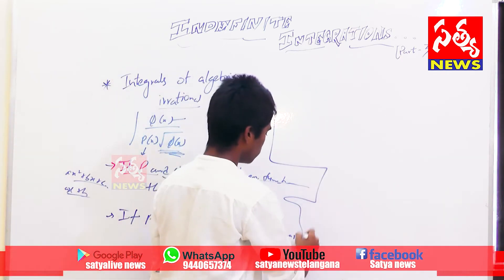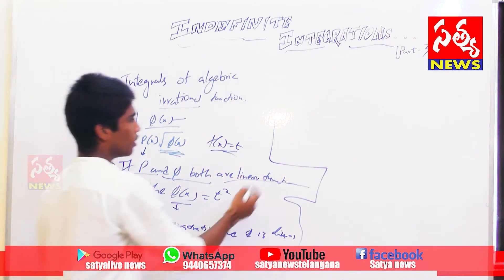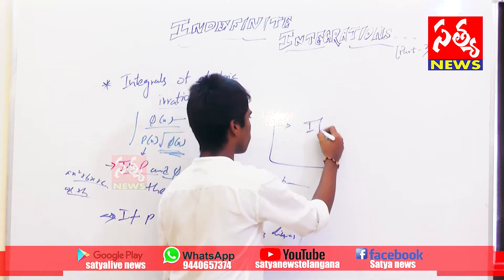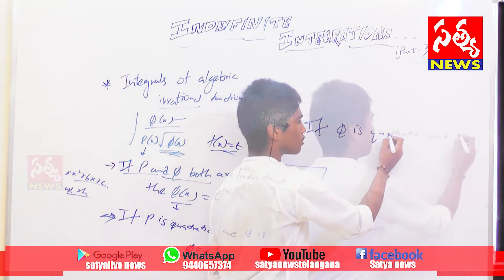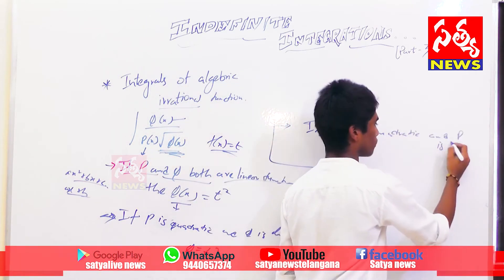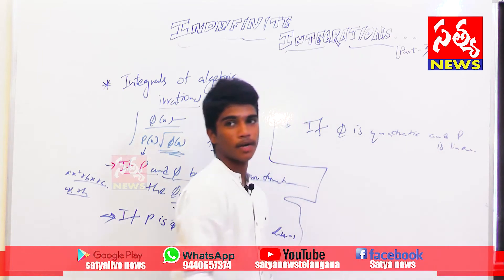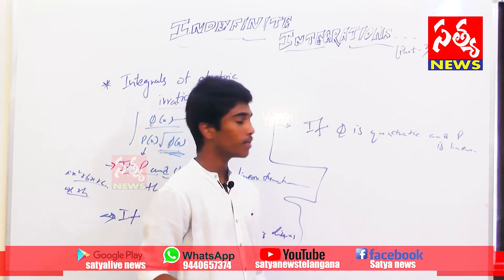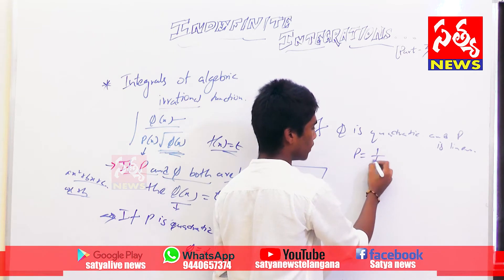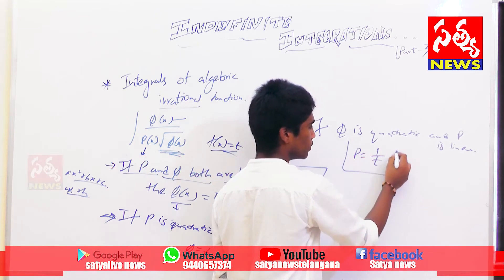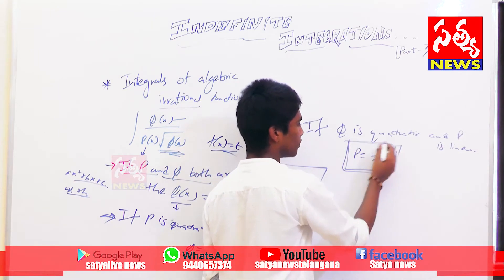The third condition is if q is quadratic and p is linear. In this kind of condition, we must take p as 1/t. This is compulsory — there is no other method for it.